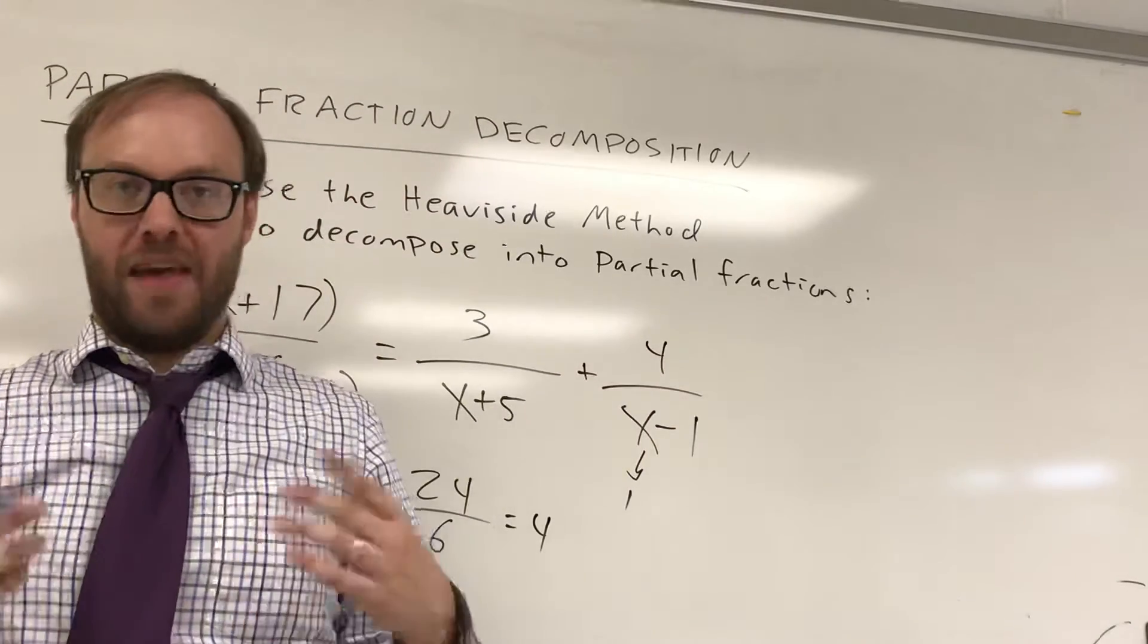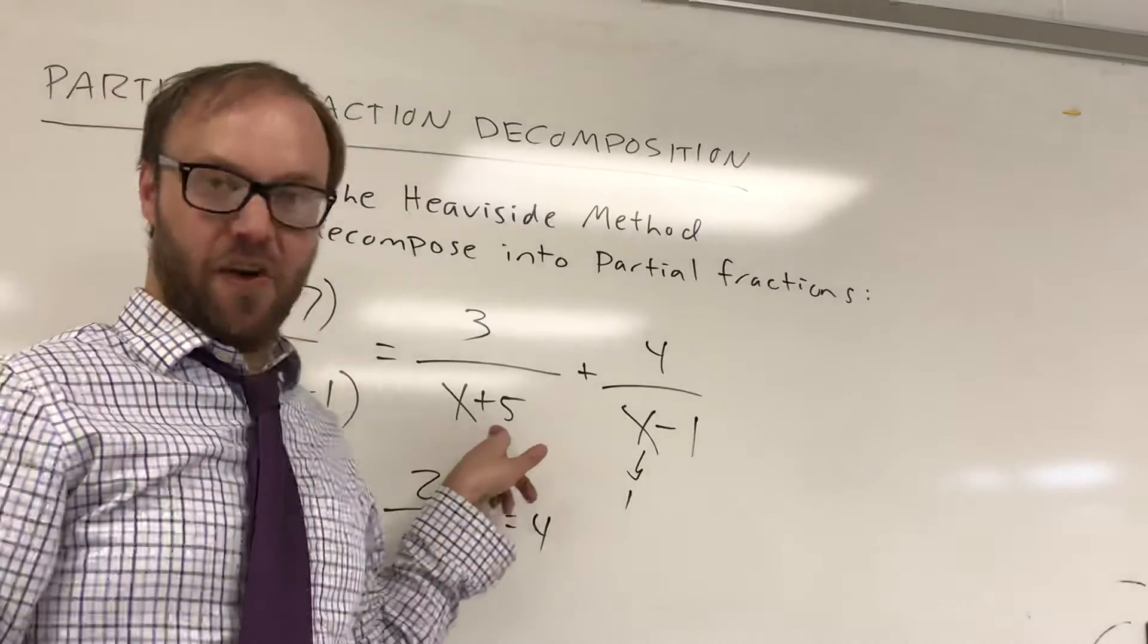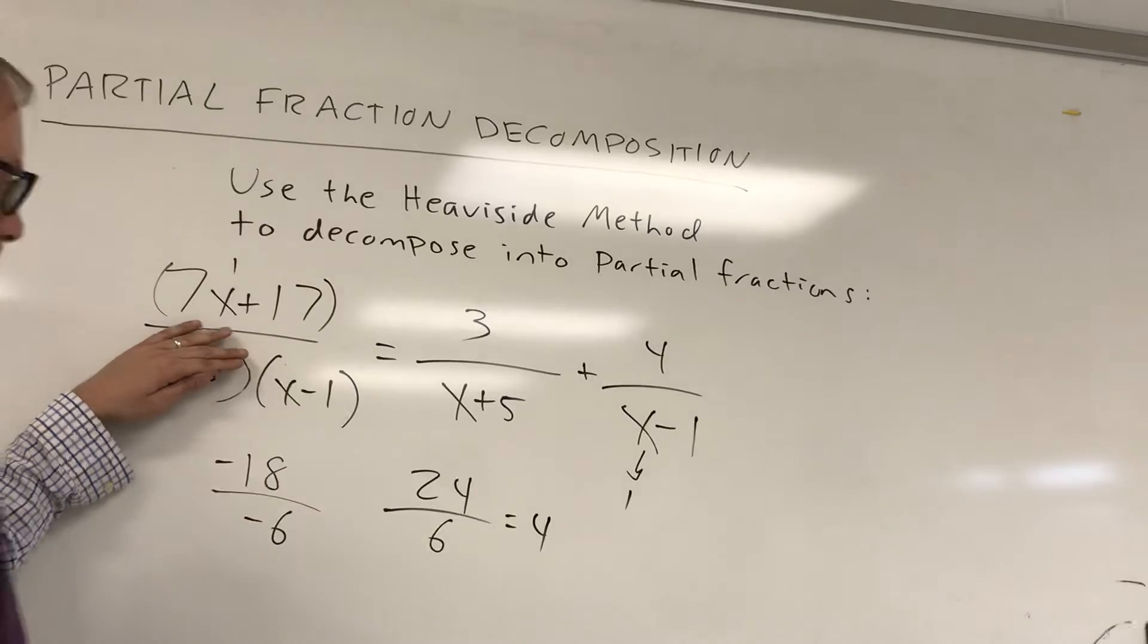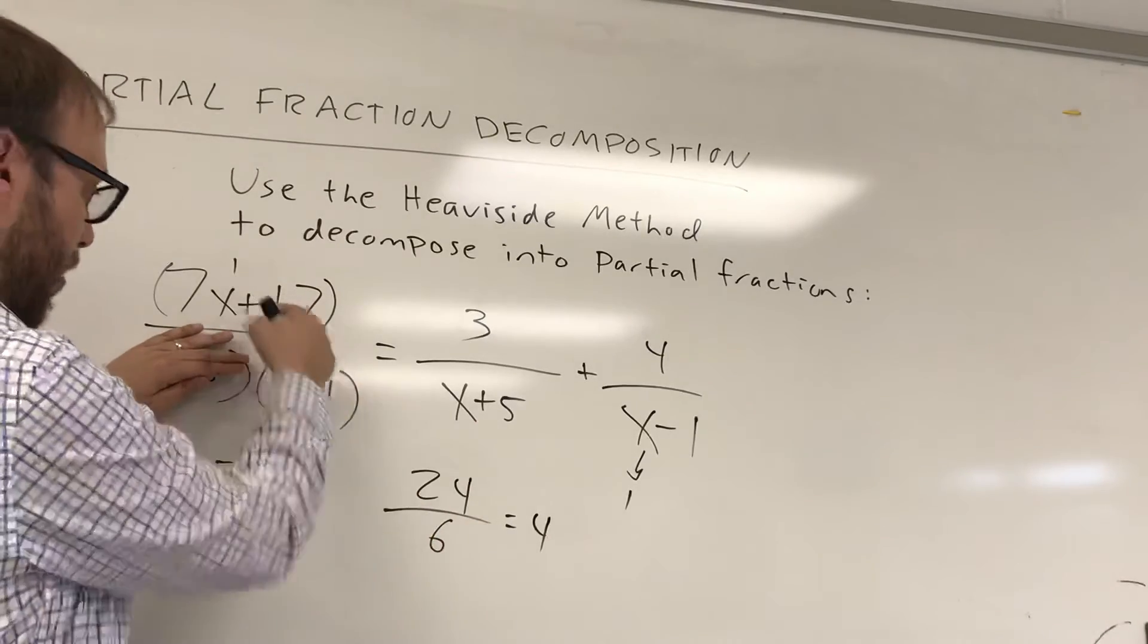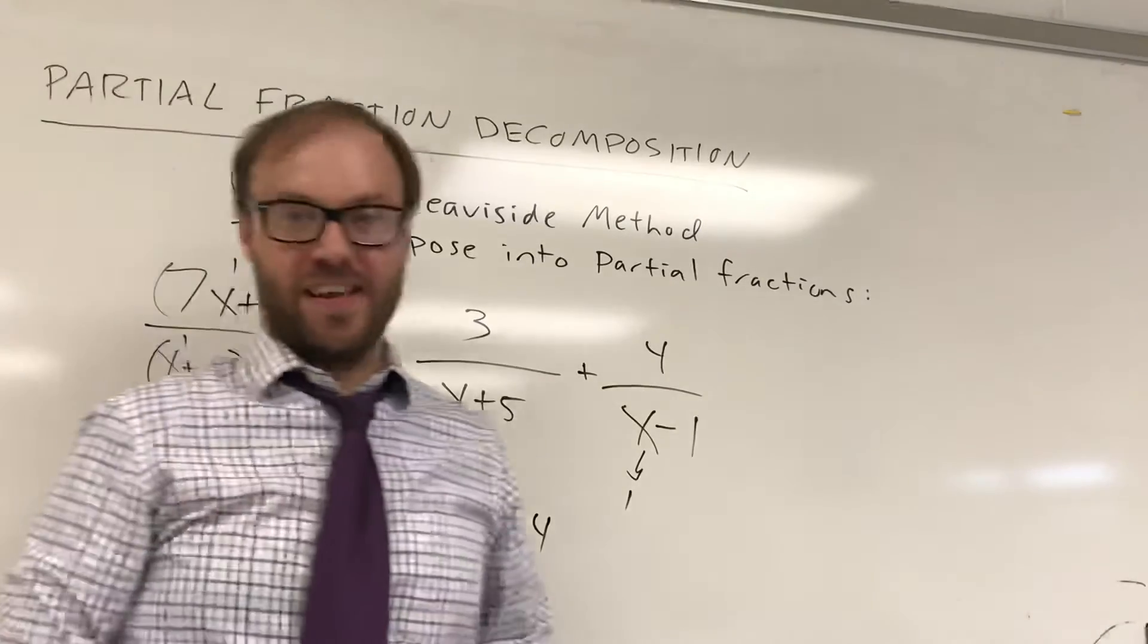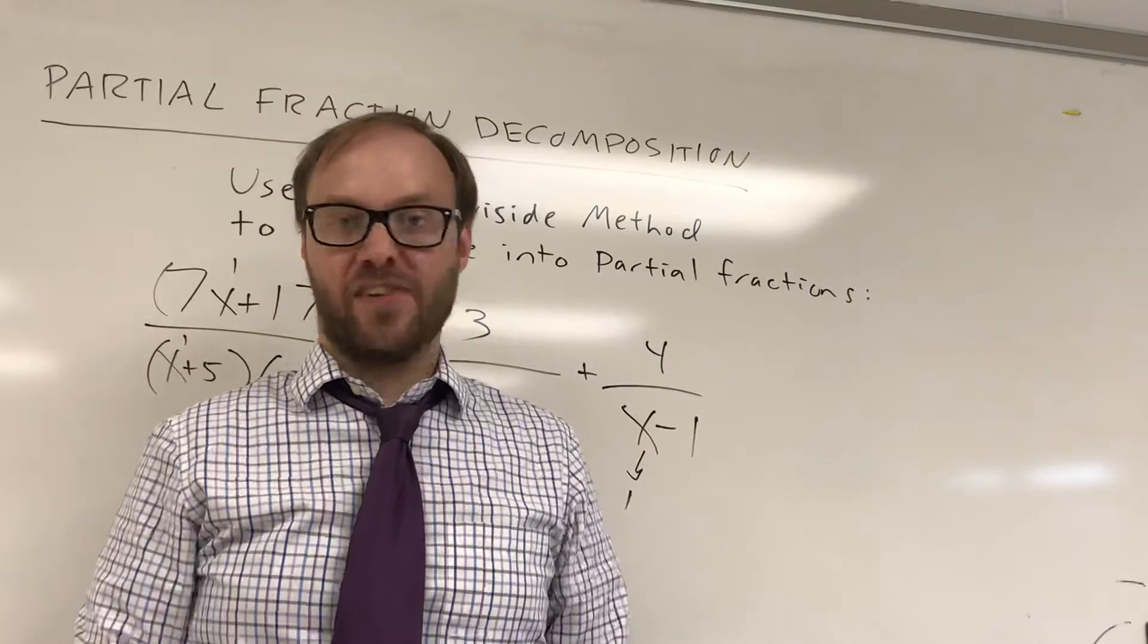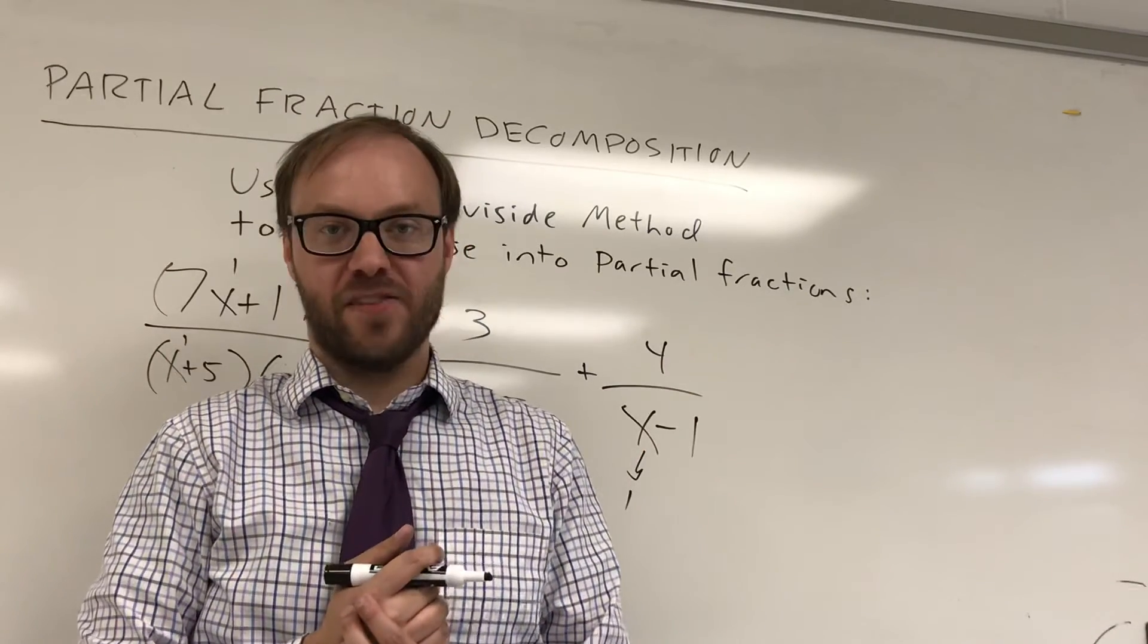And this is what's called the Heaviside cover-up method. You take the value that would make your denominator equal to 0. You cover up that 0 value and you substitute the value that would make your denominator 0 in for both of the remaining parts. It should give you your constant. And by the way, this is really nice. For example, A and B could be fractions. They weren't in this example. But this is really nice when you have fractional answers.